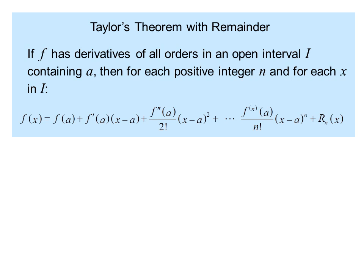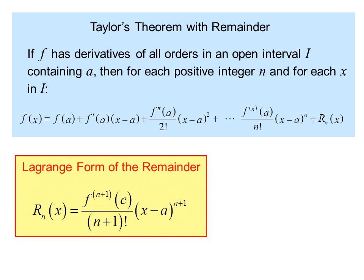Taylor's Theorem with Remainder. The theorem states that a Taylor series equals f(a) + f'(a)/1! · (x-a) + ... + f⁽ⁿ⁾(a)/n! · (x-a)ⁿ plus the remainder after n terms, Rₙ(x). The Lagrange form of the remainder is Rₙ(x) = f⁽ⁿ⁺¹⁾(c) / (n+1)! · (x-a)ⁿ⁺¹.